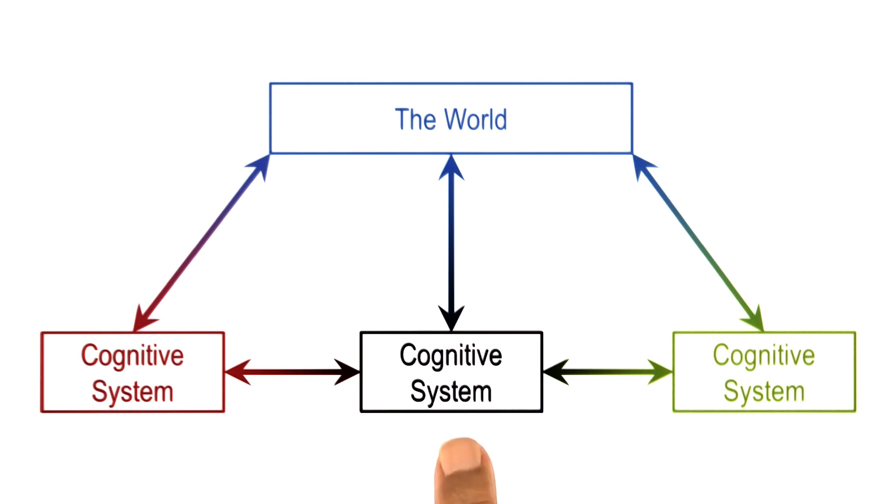So far, we have talked about a single cognitive system. But of course, one can have multiple cognitive systems. These multiple cognitive systems can interact with each other. Just like a cognitive system is situated in a physical world, it is also situated in a social world.